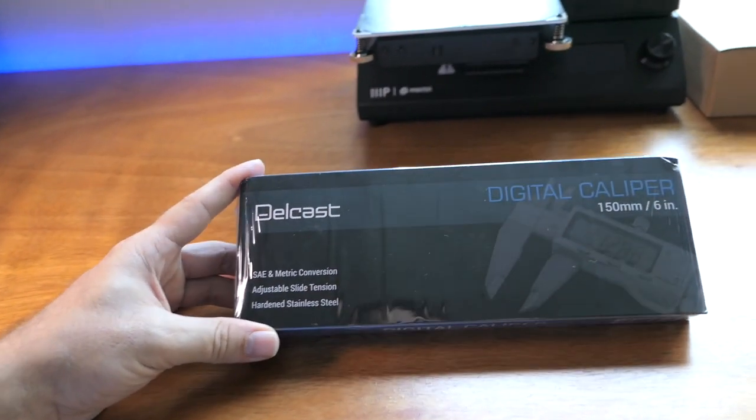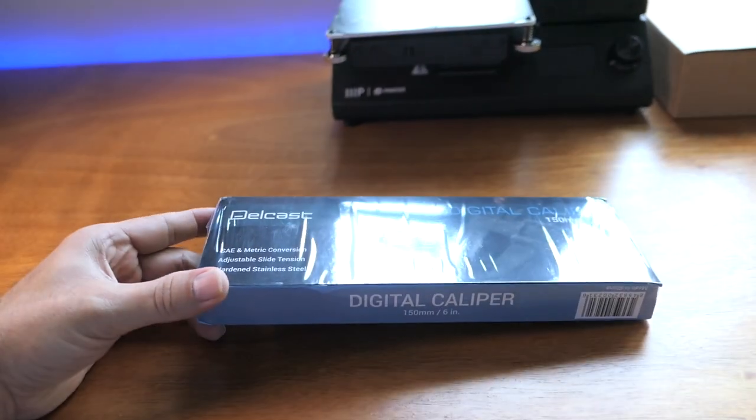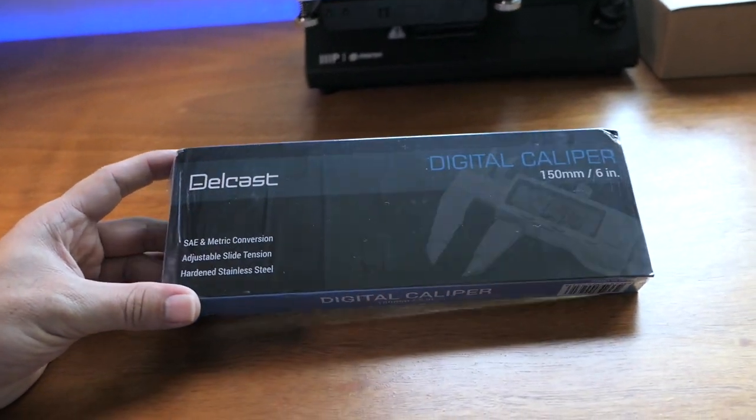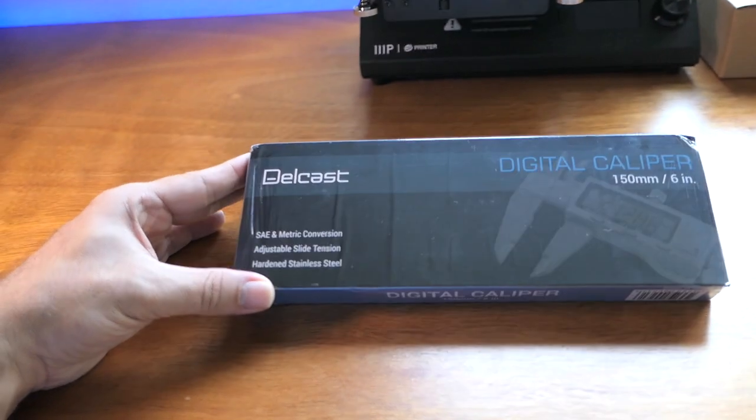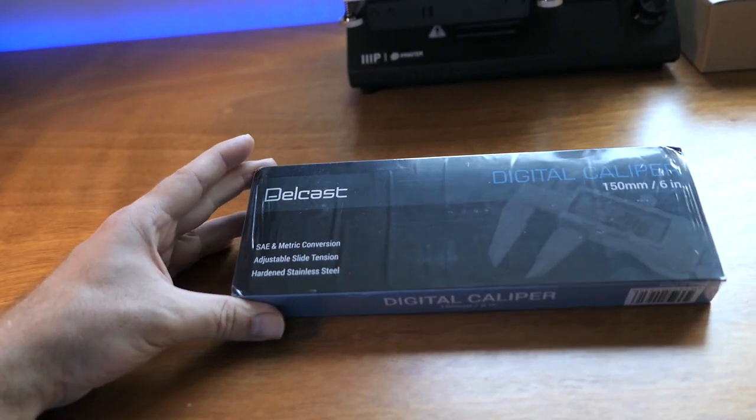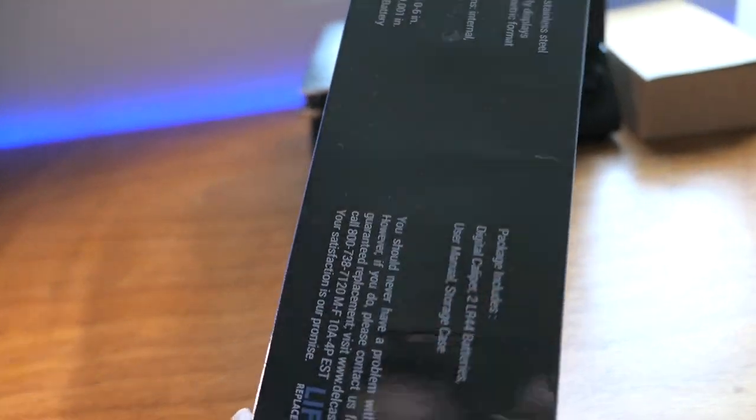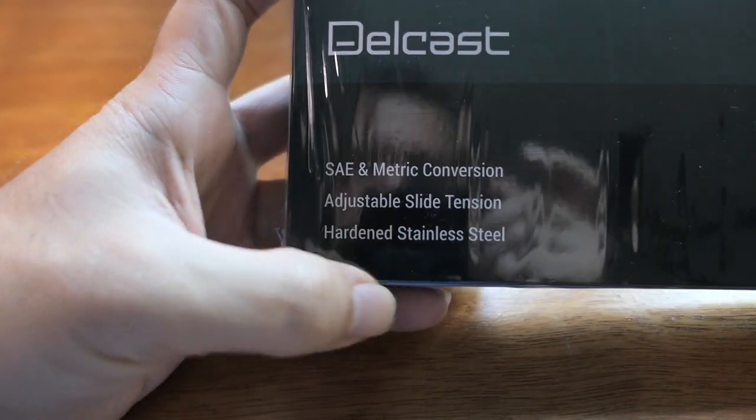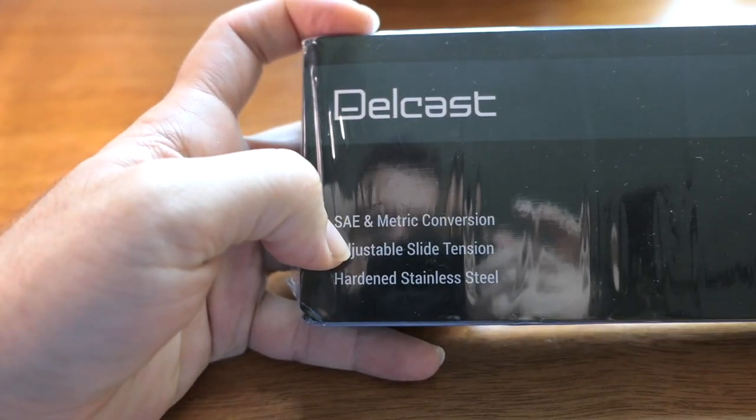So I picked this caliper up for about $10, they go for around anywhere from 10 to 15 and up obviously, but this is pretty much the cheapest metal one I can find. Okay, so it's hardened stainless steel, there it is. And the company is called Dilkast.